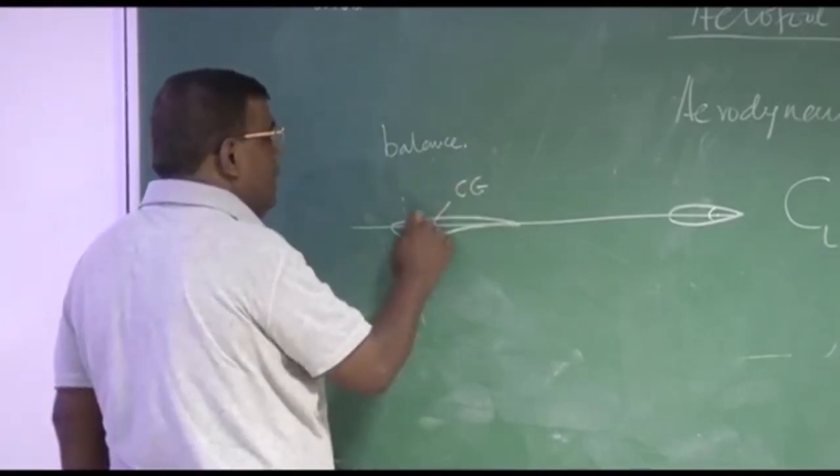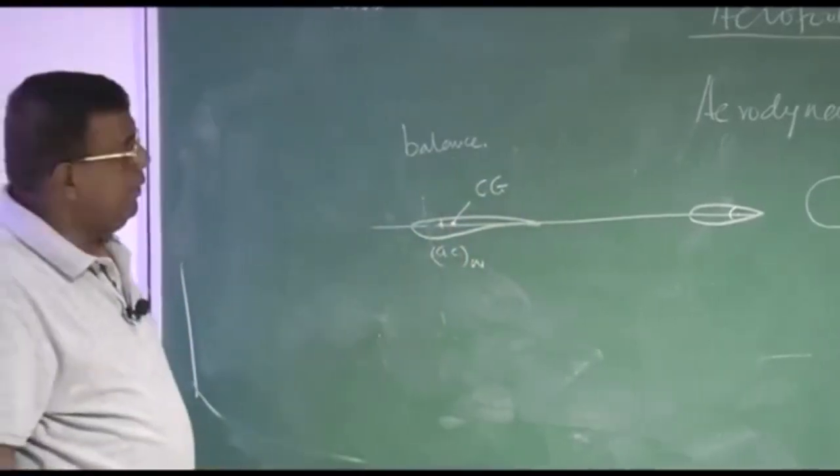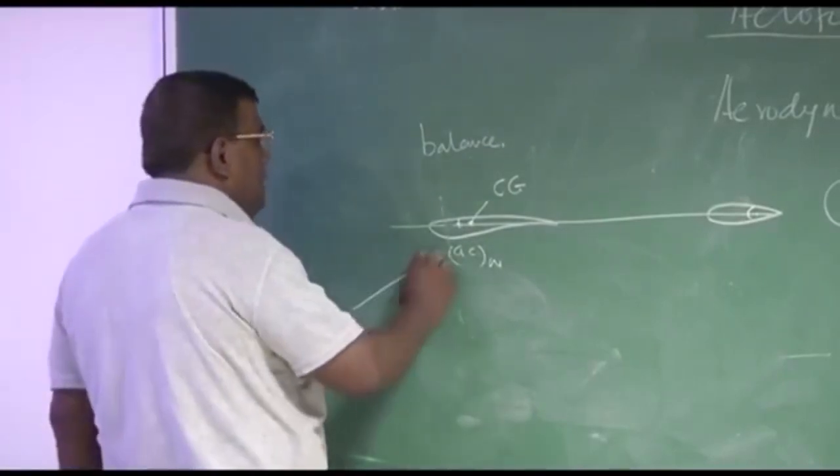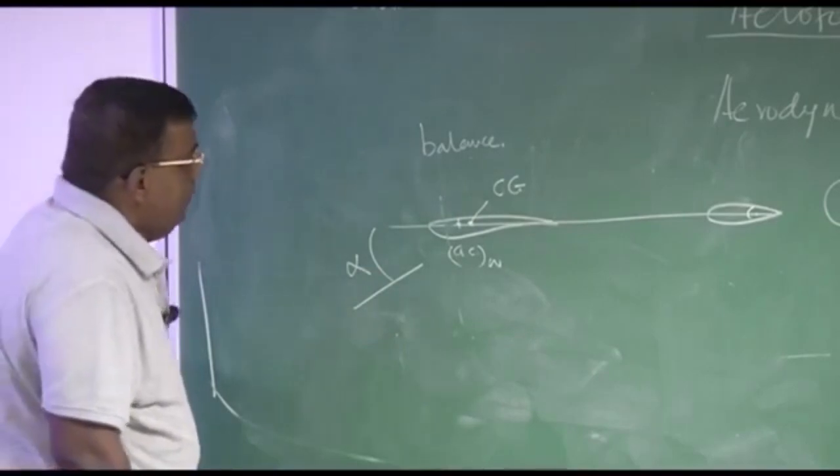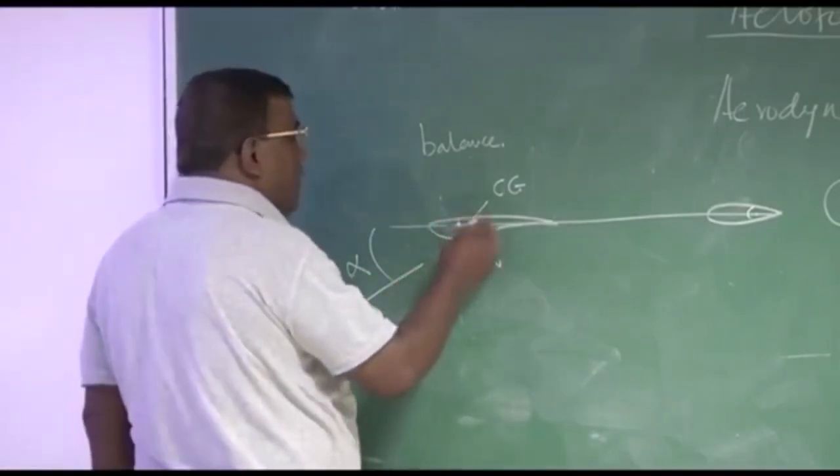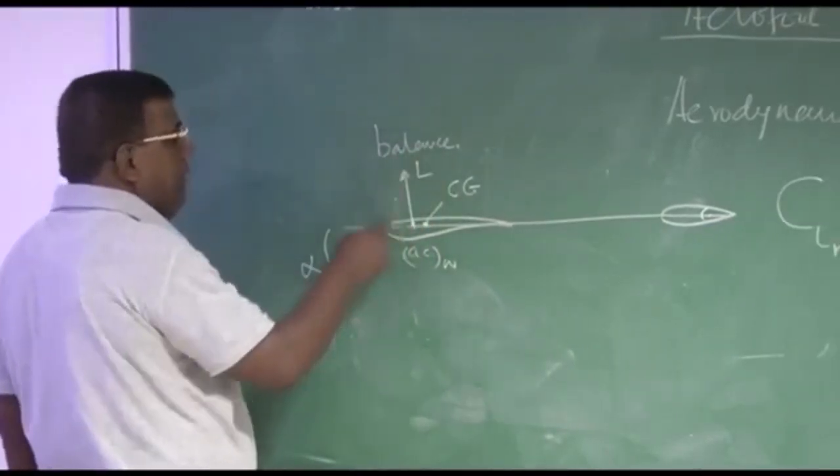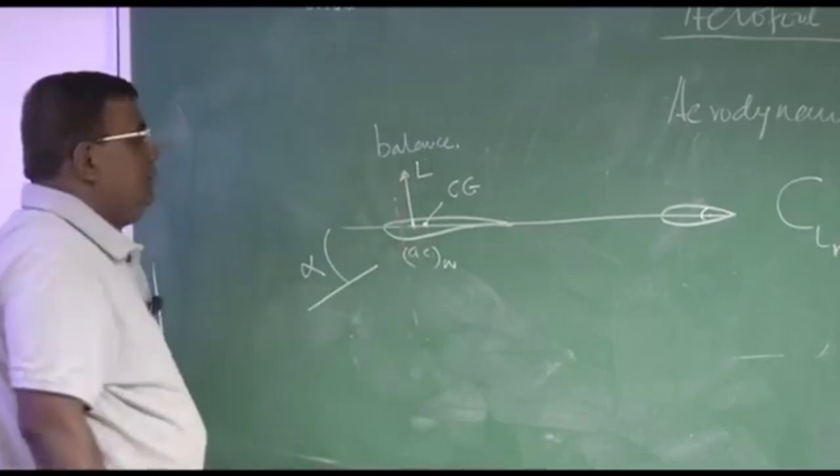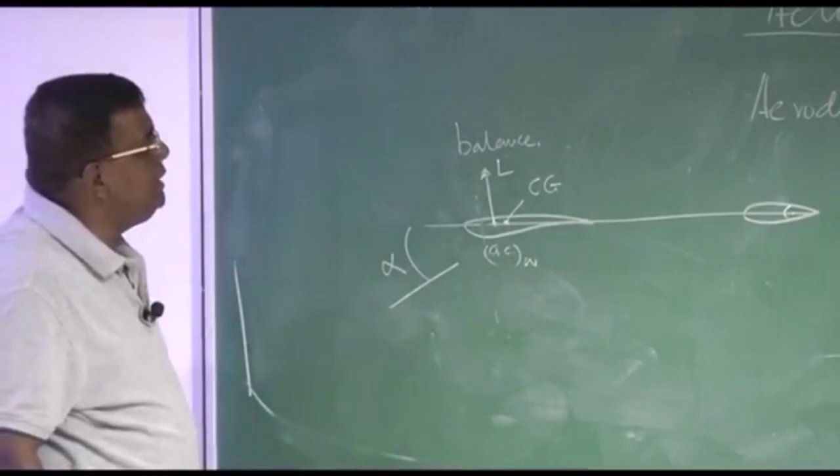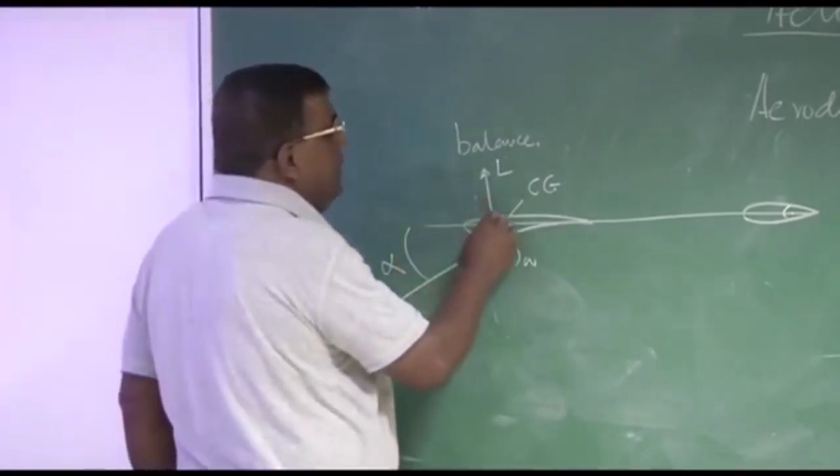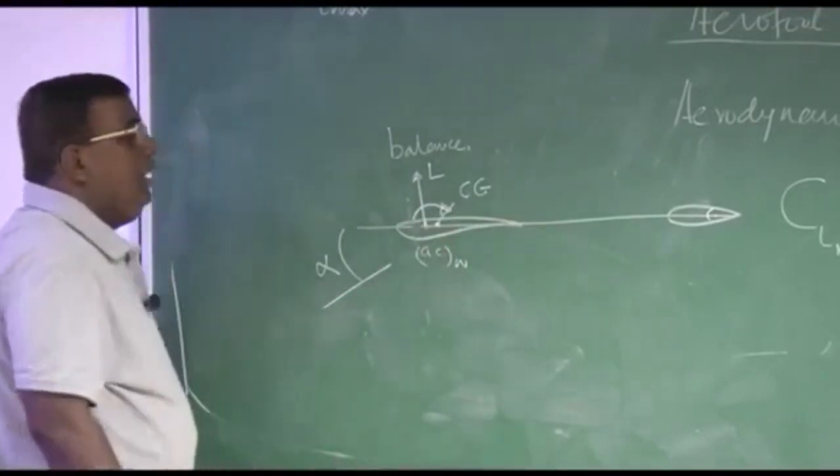Let us say this is the AC and somewhere you have kept, let us say CG is here or for simplification, let me put CG somewhere here. That is, I am writing a case where AC of the wing is ahead of CG. Now what will happen you see? As I give angle of attack alpha, there will be aerodynamic force. I am just drawing perpendicular to this, which is strictly it has to perpendicular to this. So there will be a lift generated here. This will give a nose down moment at CG.